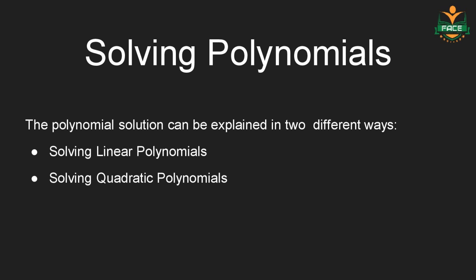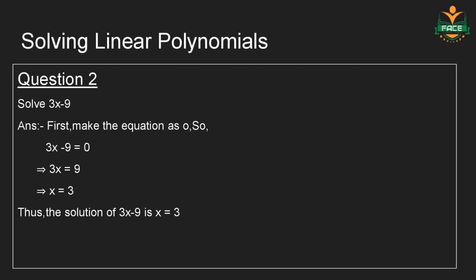Solving linear polynomials. Question number 2: Solve 3x minus 9. First, make the equation equal to 0, so 3x minus 9 is equal to 0. This implies 3x is equal to 9, which implies x is equal to 3. Thus, the solution of 3x minus 9 is x is equal to 3.